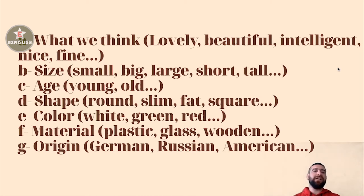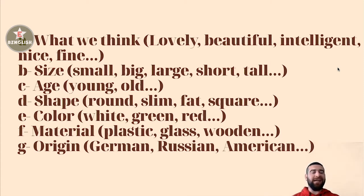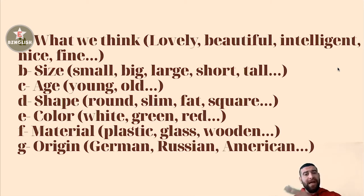The second category of adjectives is Size — Small, Big, Large, Short, Tall, Fat. همه این‌ها می‌تونن در اصل سایزهای مختلف باشن — کوچیک، بزرگ، بلند، کوتاه و چاق — all these relate to size.